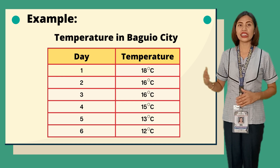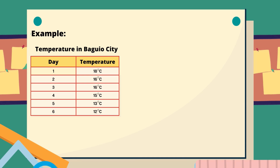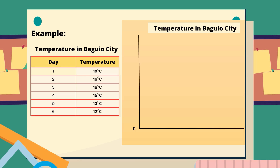Let us construct a line graph using the following data. First, draw two lines perpendicular to each other intersecting at zero. Next, mark points at equal intervals along the x-axis and write the names of the data items: day one, day two, three, four, five, and six. Along the y-axis, choose an appropriate scale: 0, 2, 4, 6, 8, 10, 12, 14, 16, 18, and 20.